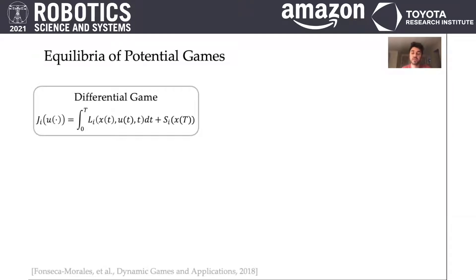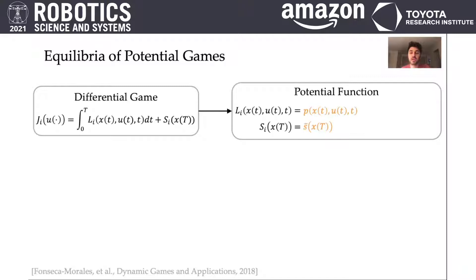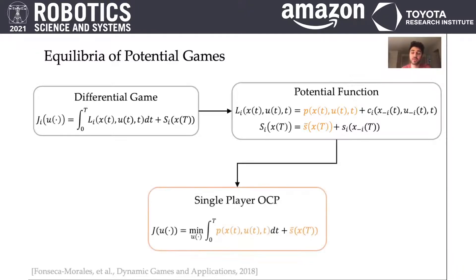Assume that every agent is optimizing a running cost L sub i over a horizon of time t and a terminal cost S sub i. If each agent's running cost and terminal cost can be expressed in terms of a function that is common to all agents and another cost term which depends only on the state and actions of all agents other than agent i, then it has been shown that the equilibria of the game can be found by solving a single optimal control problem that minimizes the potential function over the time horizon t.